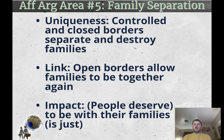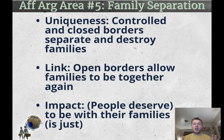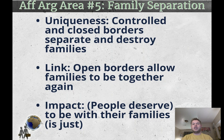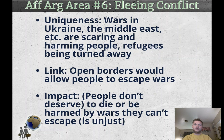Fifth is family separation, which might be the first thing many people in the United States think of on this topic. The idea is that closed and controlled borders separate and destroy families — some people make it in, some don't, or one person goes to a country to earn money to send back because the rest of the family couldn't get the correct visas or it was too dangerous to bring them. This is harmful for both adults and children. By opening borders, families would be able to be together again. The impact: people deserve to be with their families, or families being together is just.